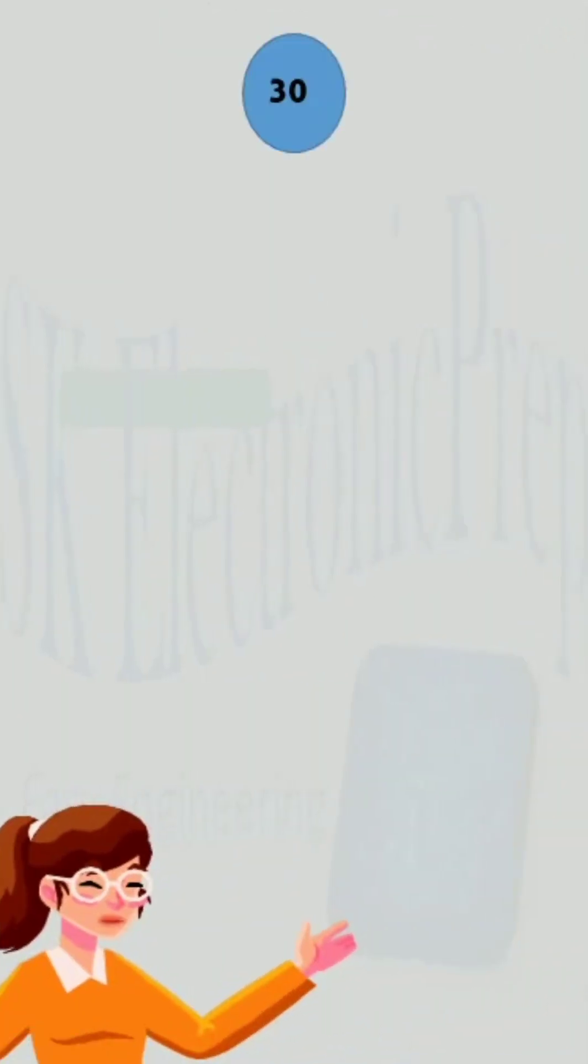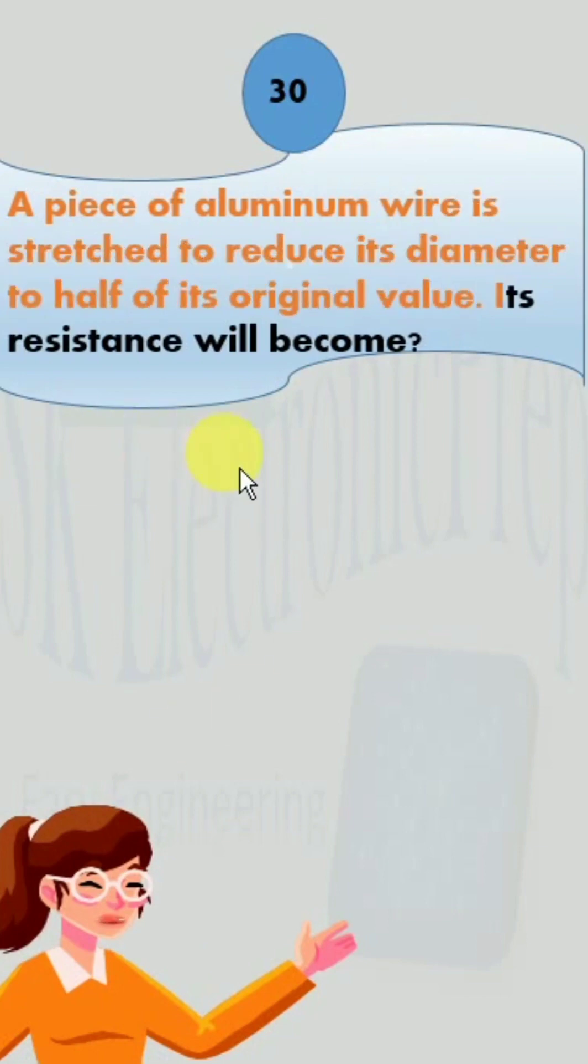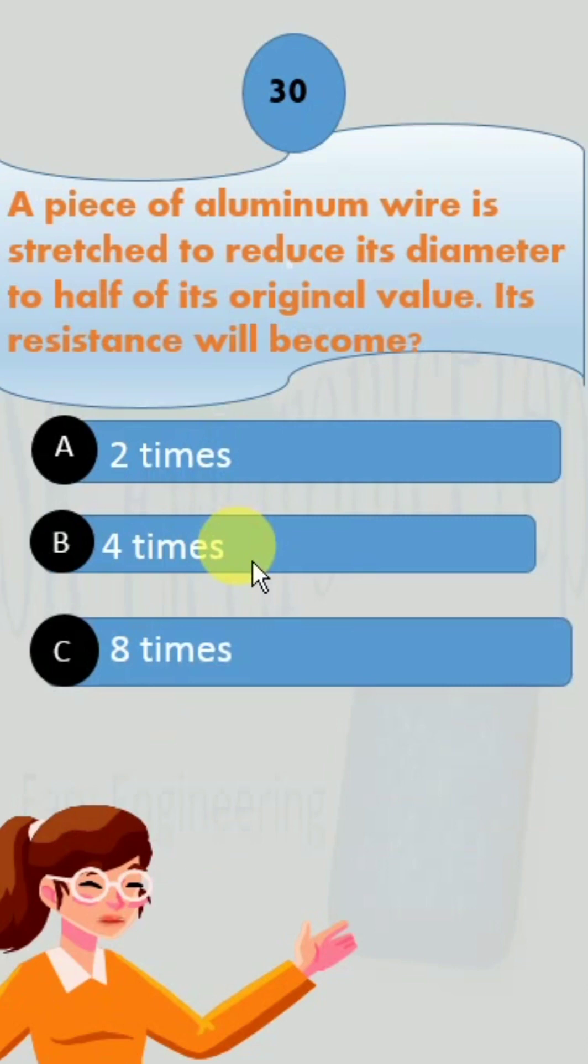Basic physics question number 30: A piece of aluminum wire is stretched to reduce its diameter to half of its original value. Its resistance will become: option A, 2 times; B, 4 times; C, 8 times; and D, 16 times.